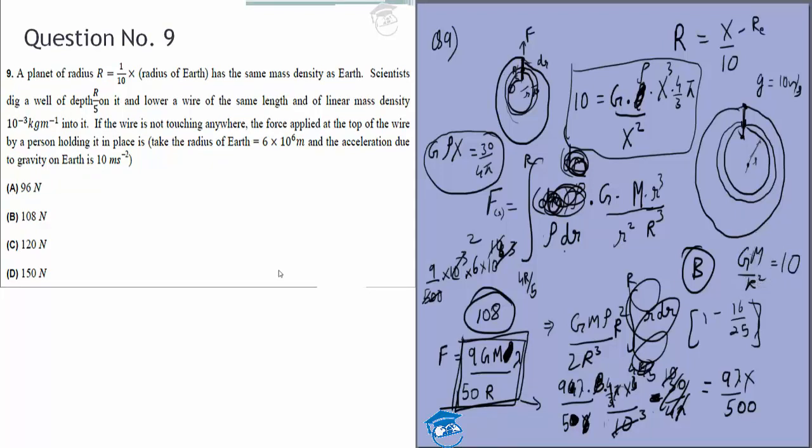Knowing that for Earth GM/r² equals 10, and they gave r, basically they gave us r and GM/r². They said you can find m, and this density is the same as that planet, so you can find the other stuff. A lengthy question with chances for mistakes, but not very difficult conceptually. Thank you.